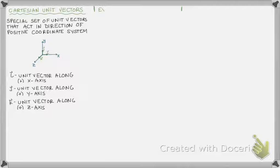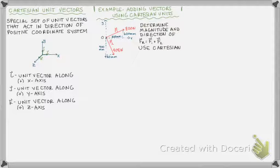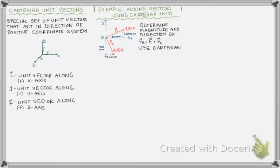Now I'm going to bring all this vector material together and do a detailed example: adding two vectors using Cartesian unit vectors. Here is the problem. I have two vectors. The first, F1, is 800 newtons acting in the positive X, positive Y quadrant. F2 is 408 newtons acting in the fourth quadrant — positive X, negative Y. Their directions are defined using a triangle by giving the X and Y dimensions of the triangle.